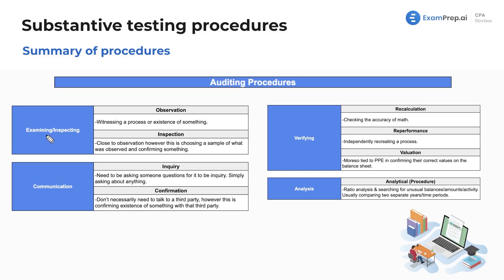First off, if we are in the process of examining or inspecting, what are these going to be related to? Observation is witnessing a process or the existence of something, generally more so related to a test of controls.